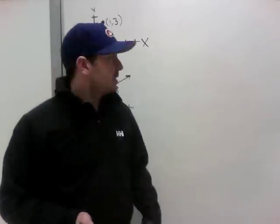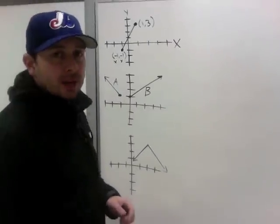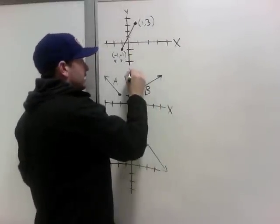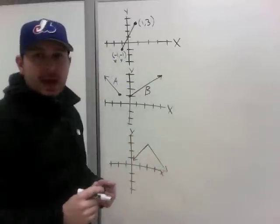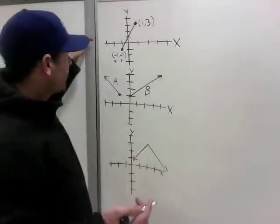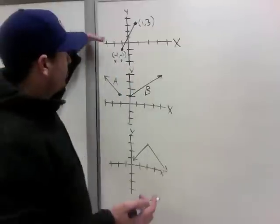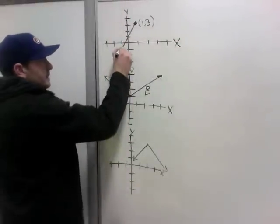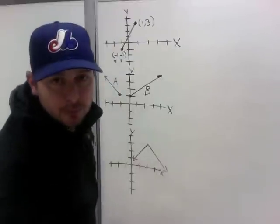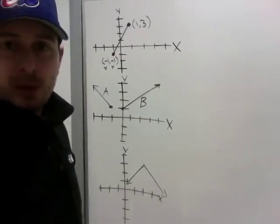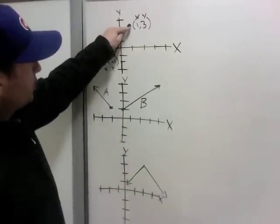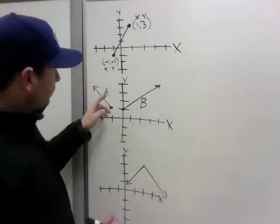Now we're going to look at domain and range using connected graphs, always representing everything in terms of X and Y. Domain is X, range is Y. You need to be able to read coordinates — always X first, then Y, alphabetical order. For example, one point is negative one on X and negative one on Y, written as (-1, -1). Another point goes over one and up three, so it's coordinate (1, 3).